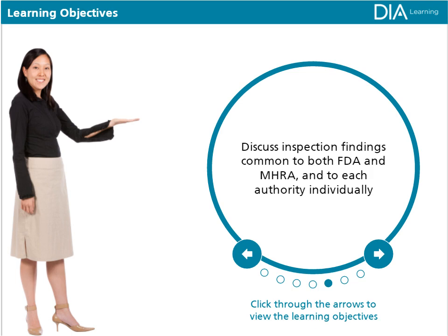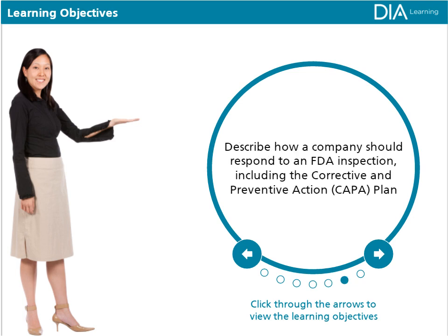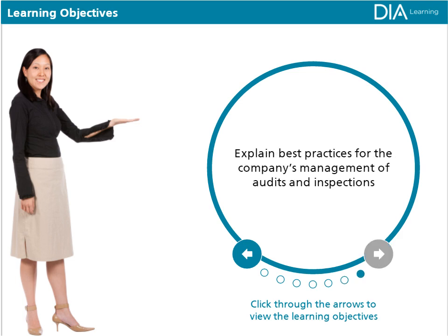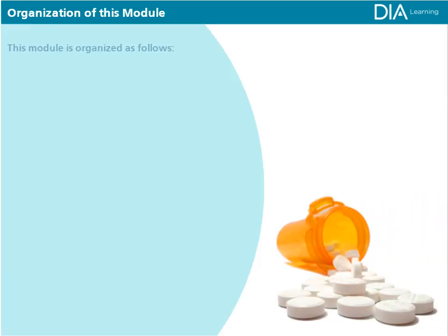Learners will also be able to discuss inspection findings common to both FDA and MHRA, and to each authority individually; describe how a company should respond to an FDA inspection, including the corrective and preventive action (CAPA) plan; and explain best practices for the company's management of audits and inspections.